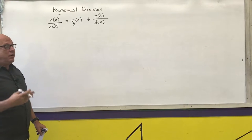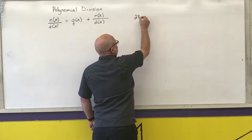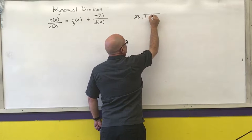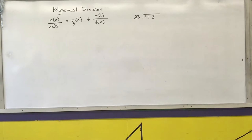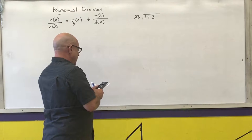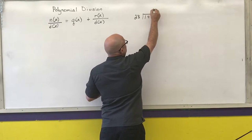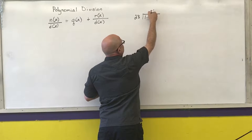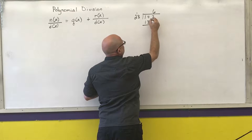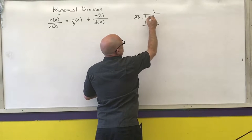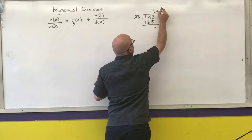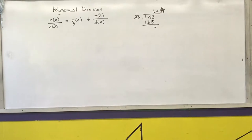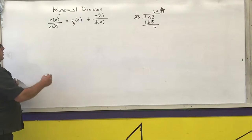This is the same thing we do with regular long division. For example, 23 into 142: how many times does 23 go into 142? It goes in six times. Six times three is 18, six times two is 12 plus one is 13, subtract and I get four. So I have six and four twenty-thirds. That's the type of answer we're going to get, but instead of integers we'll have polynomials.